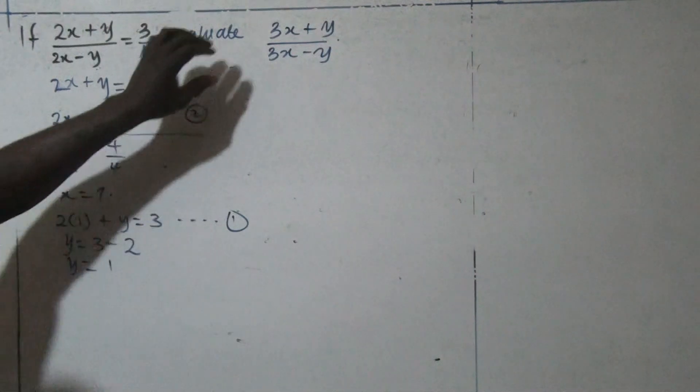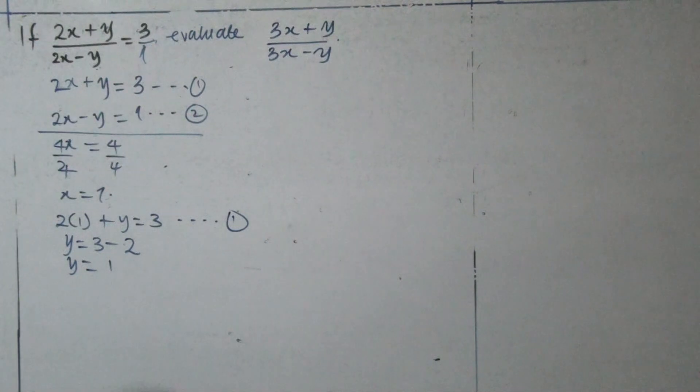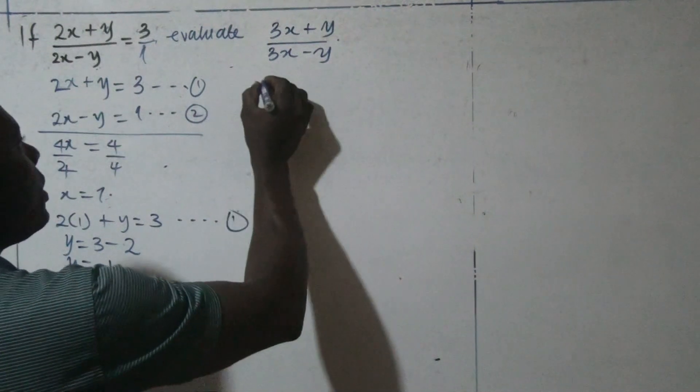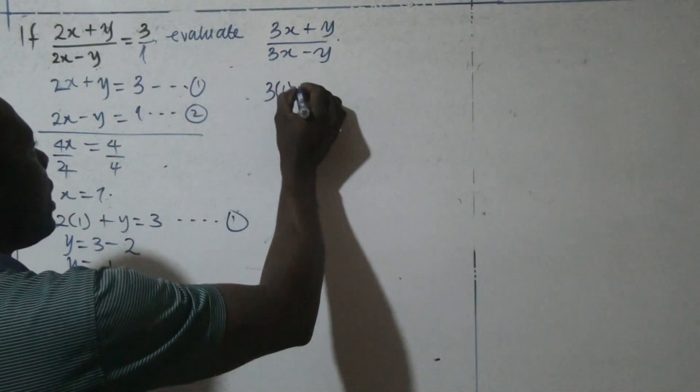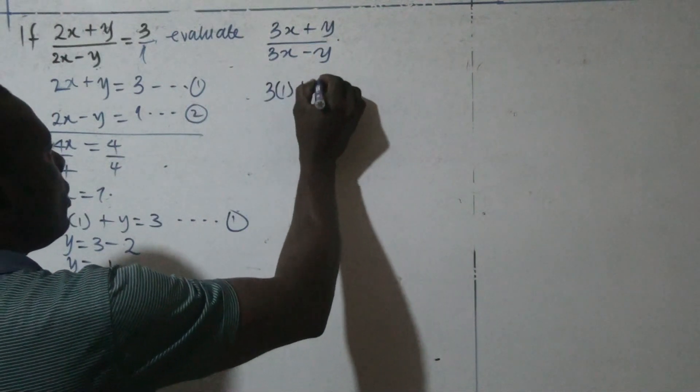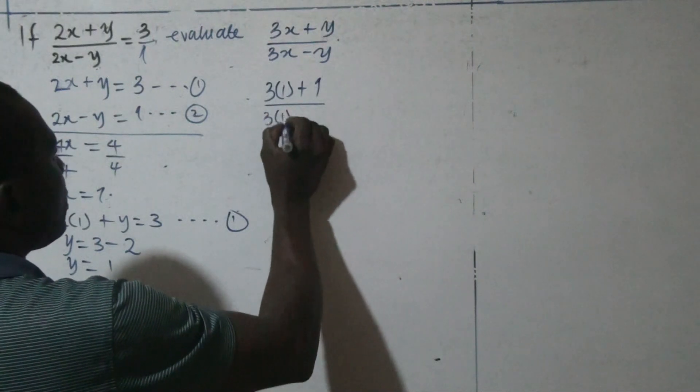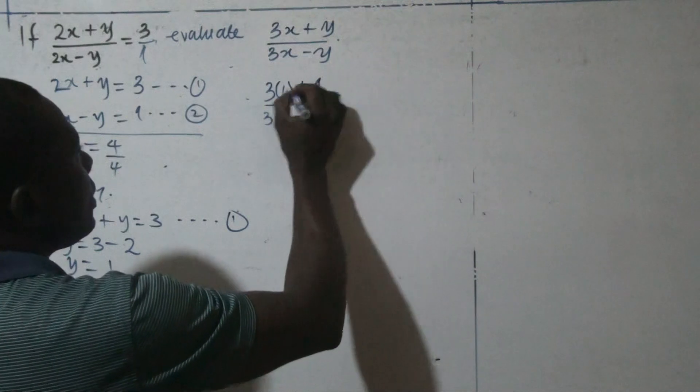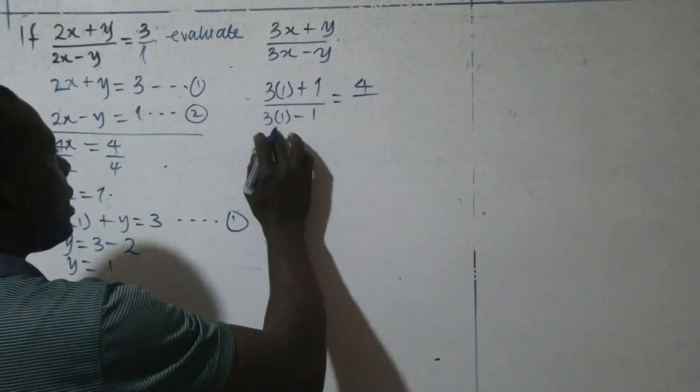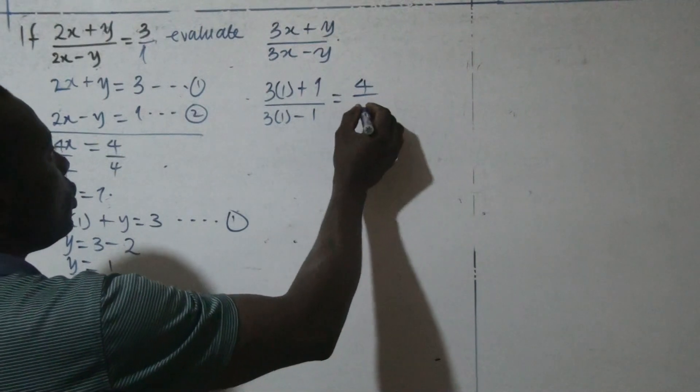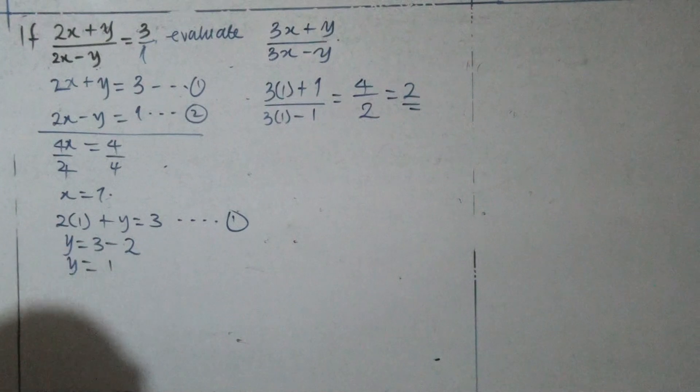With this, we can evaluate this. We substitute the respective value of x and y in these equations. And from here, x is 1, 3 times 1 plus 1, divided by 3 times 1 minus 1. Here, the numerator is 4, divided by 3 times 1 is 3 minus 1 is 2. So, this expression is equals to 2.